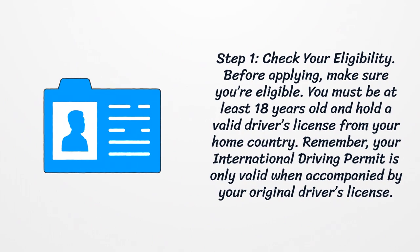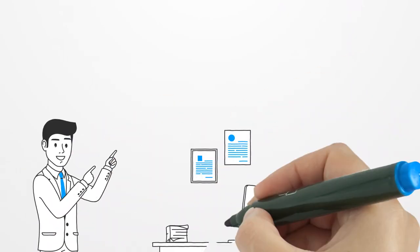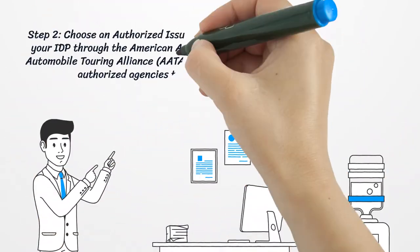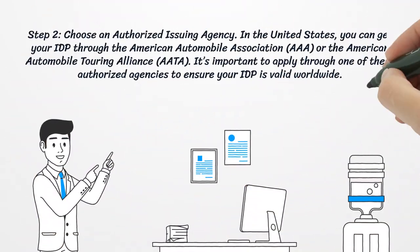Step 1: Check your eligibility. Before applying, make sure you're eligible. You must be at least 18 years old and hold a valid driver's license from your home country. Remember, your international driving permit is only valid when accompanied by your original driver's license.